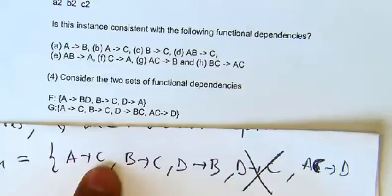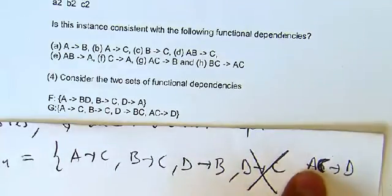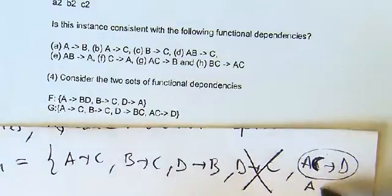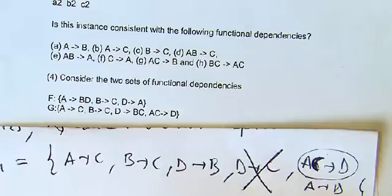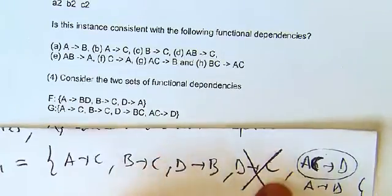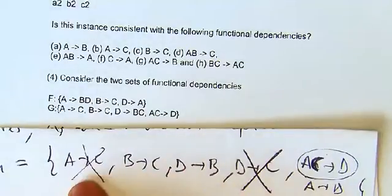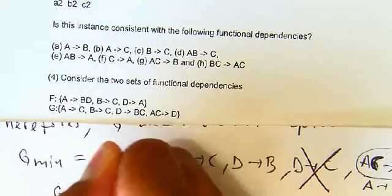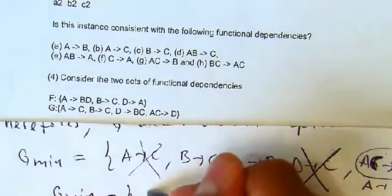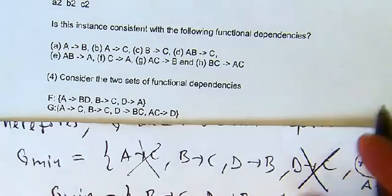Also, since A→C and we know A→D (which we can derive), we can substitute. Using A→D, D→B, and D→C, we no longer need A→C separately. So the minimum cover G_min is: B→C, D→B, and A→D.